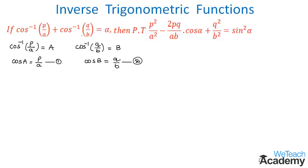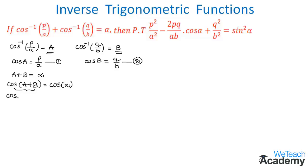According to the given example, cos⁻¹(P/A) + cos⁻¹(Q/B) = α. Replacing these with A and B gives A + B = α. Applying cos to both sides: cos(A + B) = cos α. Expanding using the compound angle formula: cos A cos B − sin A sin B = cos α.